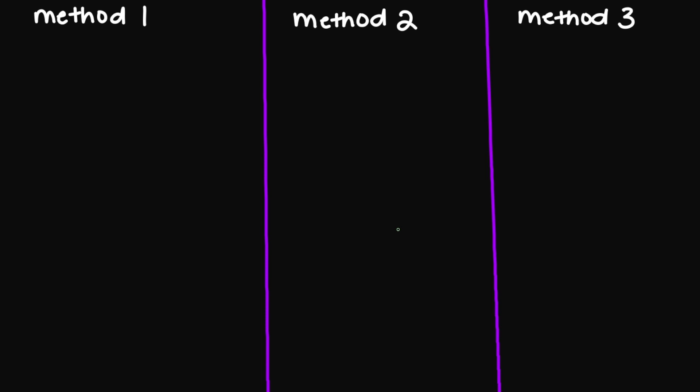Hey guys, welcome back. So today we'll be going over equivalent and non-equivalent fractions using three different methods. So let's look at our first example. Let's say we had three over four and six over eight. How do I know if these fractions are equivalent?